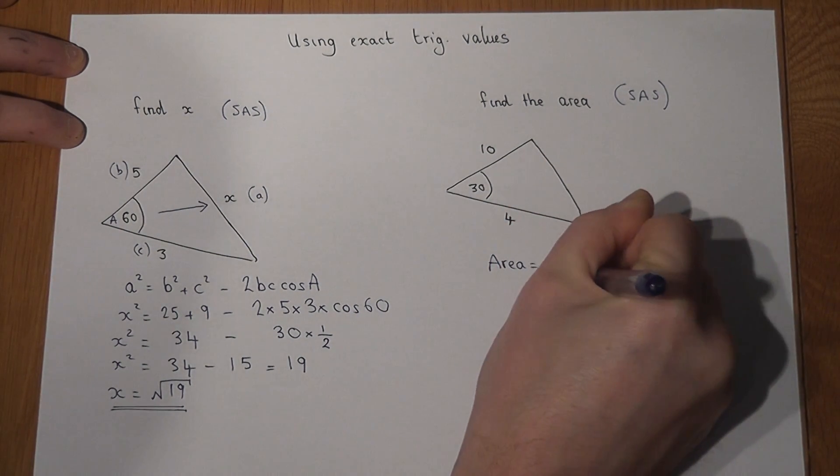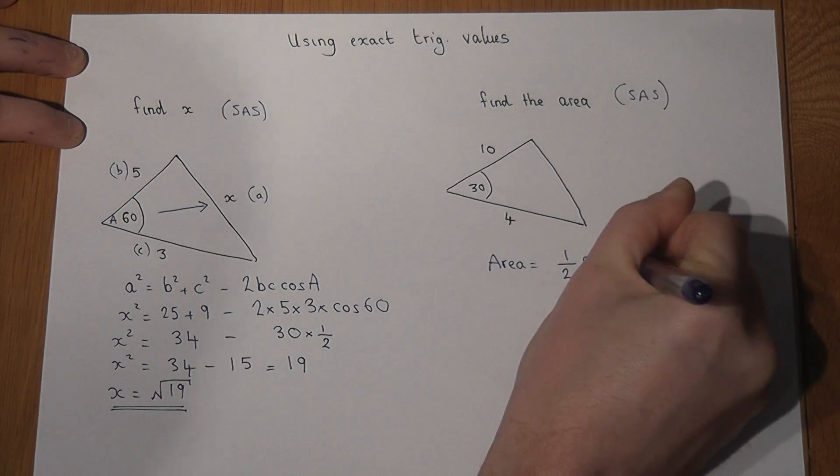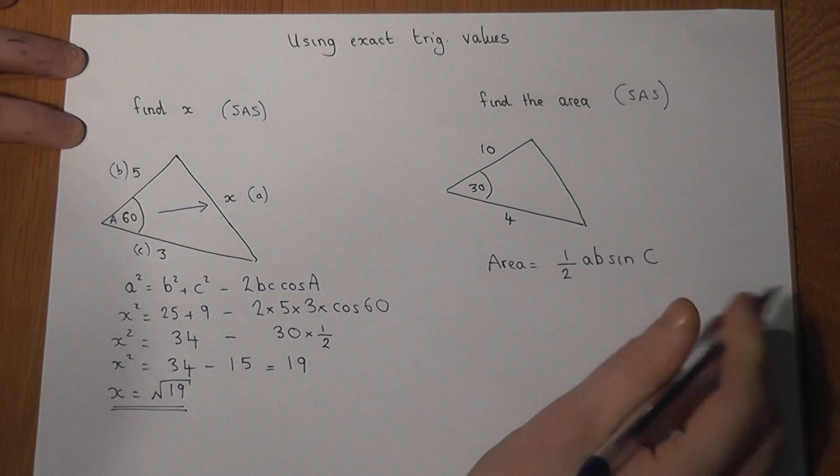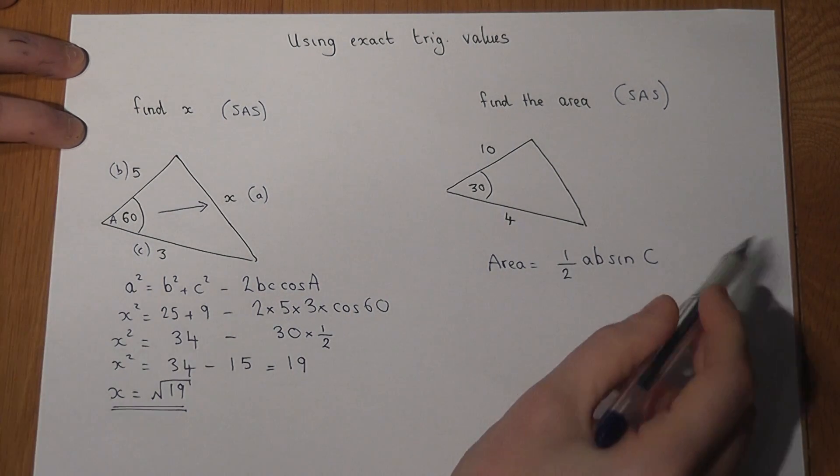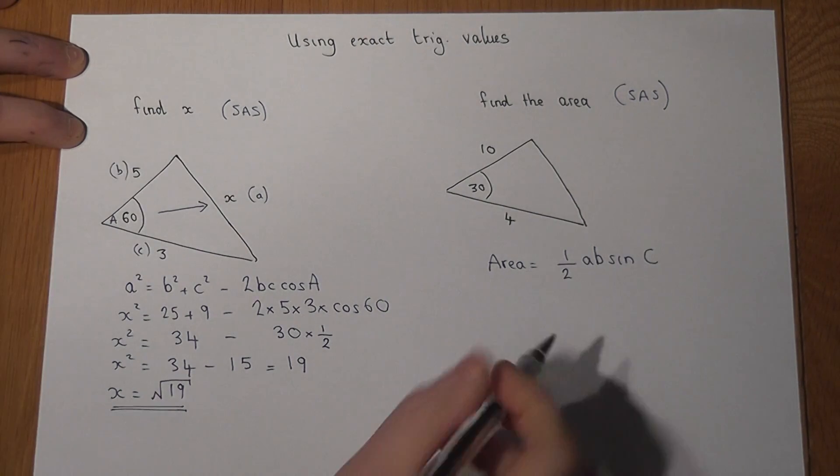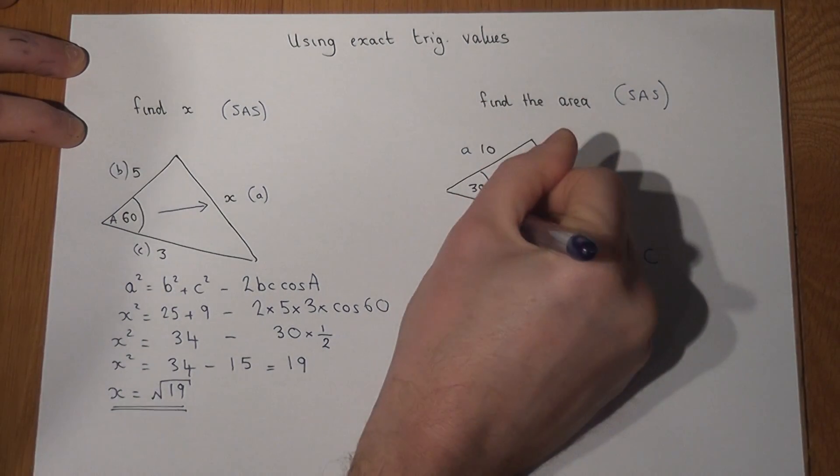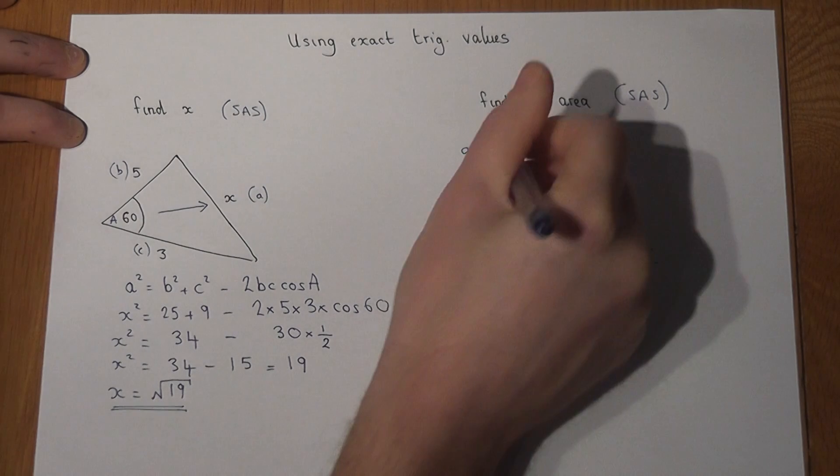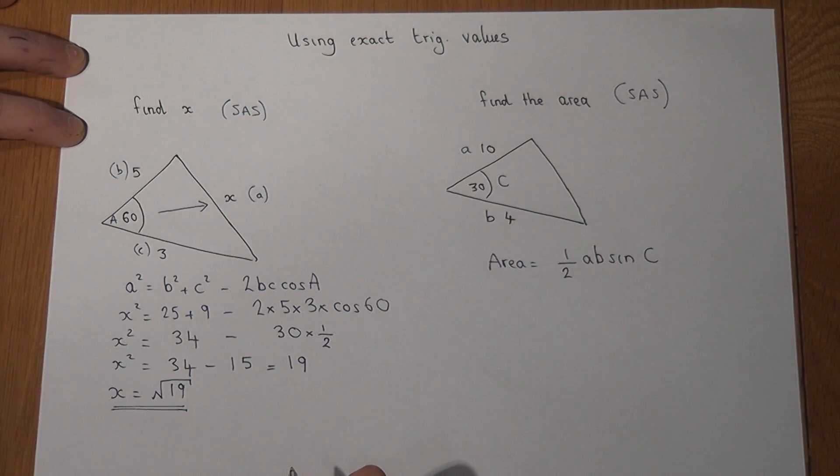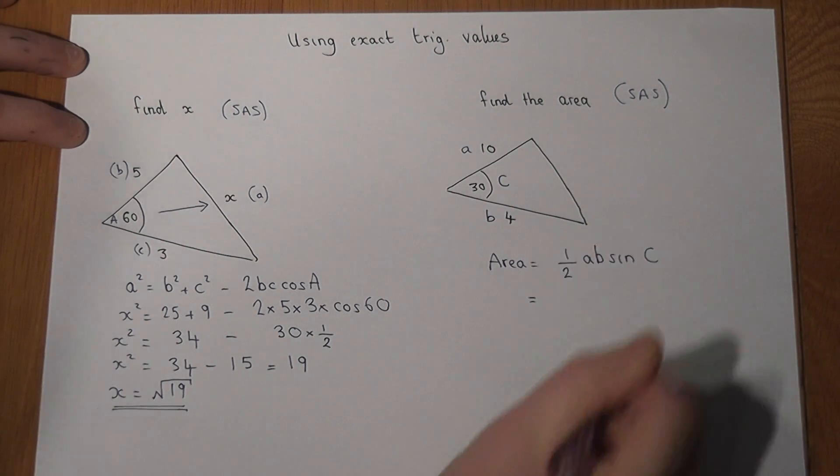The letters would be chosen fairly arbitrarily here - we had a, b, and c. In this formula, the a and b are the two known sides, and C is the angle.